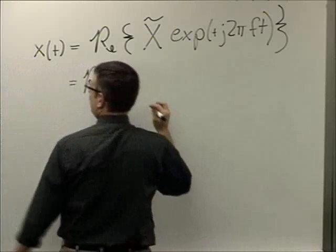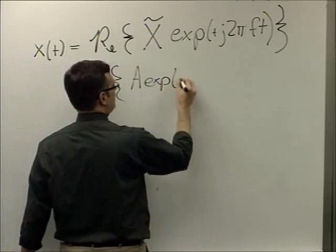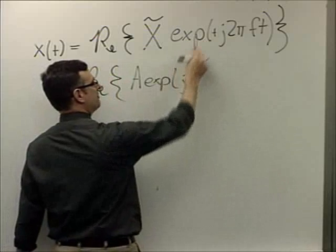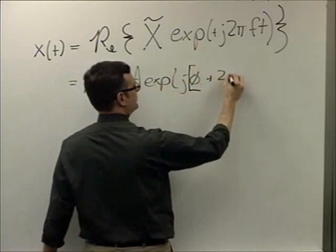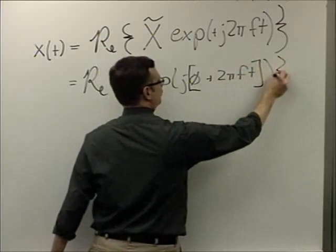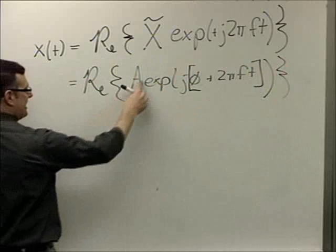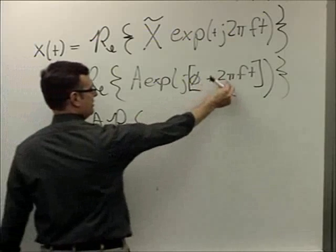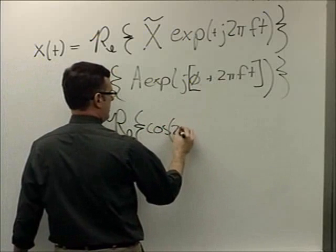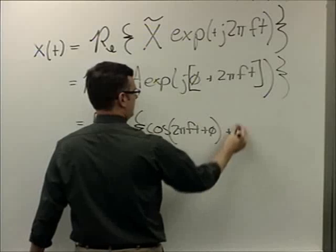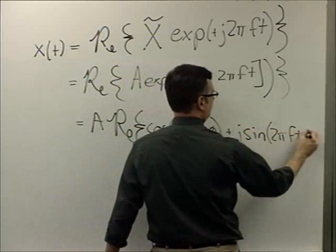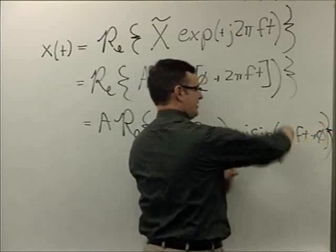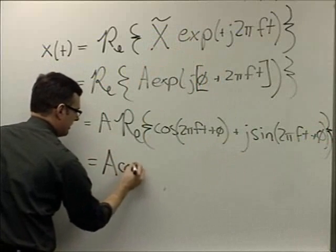We said that my phasor for that one was A times EXP J phi. Well, when I have two complex exponents multiplying one another, I can just add their arguments. So let me add plus 2 pi Ft. And I take the real value of this whole thing. I got a real value amplitude, so I can take that out in front. And the real value of my Euler's Law expansion of this complex exponential is A cosine 2 pi Ft plus phi plus J sine 2 pi Ft plus phi. This is the real part. This is the imaginary part. The imaginary part goes away and what I'm left with is my original time domain expression.